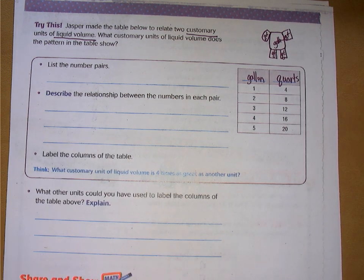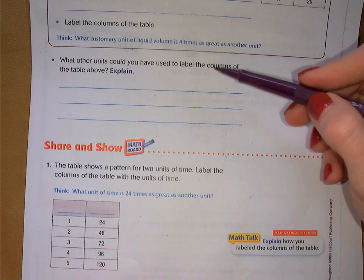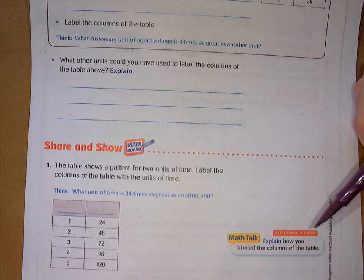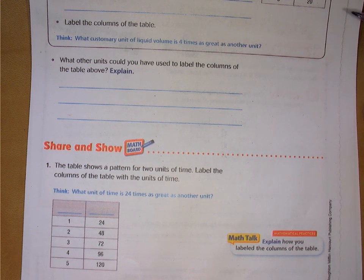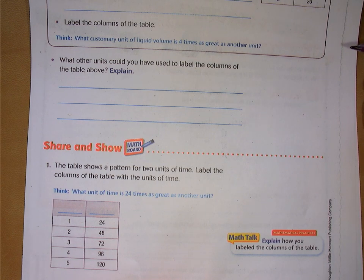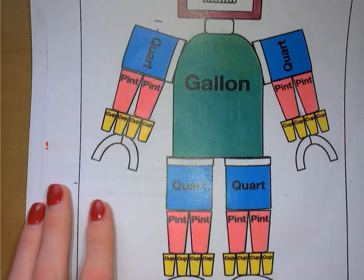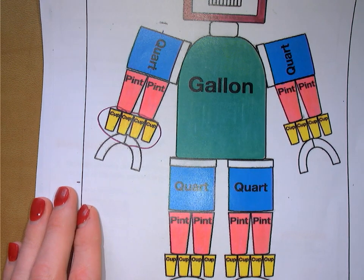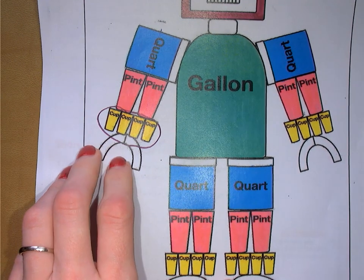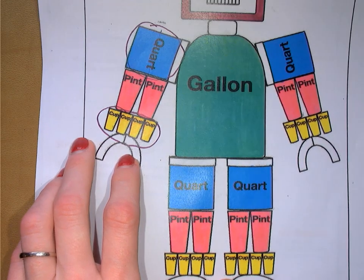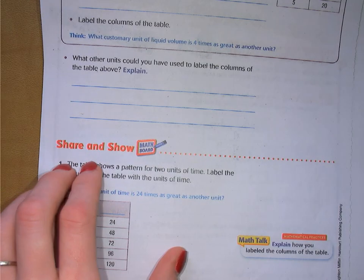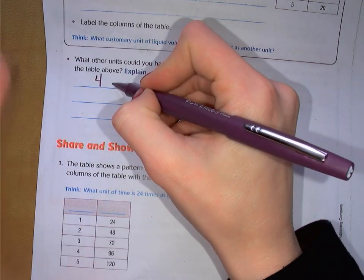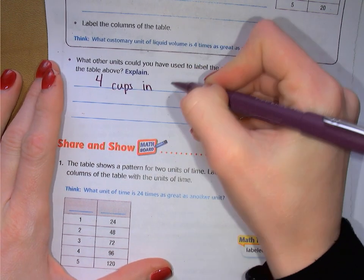What other units could you have used to label the columns of the table? There's four of something in a something. Looking at gallon man, I see four yellows — four cups in a quart. There are four cups in one quart, so we could have used that label instead.